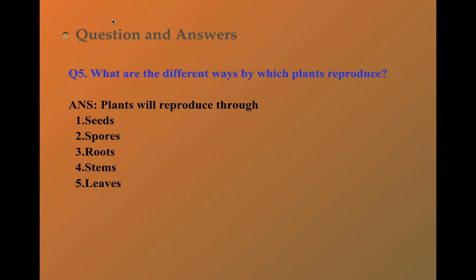Coming to the fifth question, what are the different ways by which plants reproduce? The answer is plants will reproduce through seeds, spores, roots, stems, leaves.